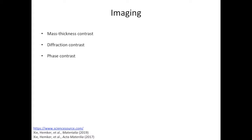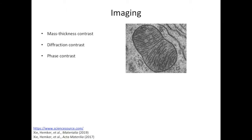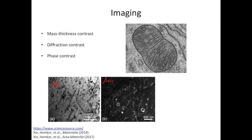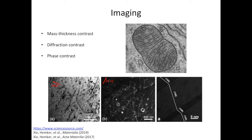In the third section, we'll discuss imaging and the origin of contrast. There are three types: mass thickness contrast, diffraction contrast, and phase contrast. Mass thickness contrast is used to image stained biological samples — for example, mitochondria in a cell. Diffraction contrast is used to image crystallographic defects such as dislocations and stacking faults. Phase contrast is what allows us to see atomic-level information in high-resolution TEM images, such as nano twins in boron carbide.